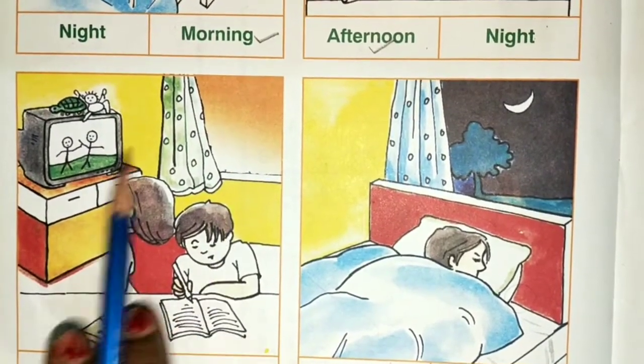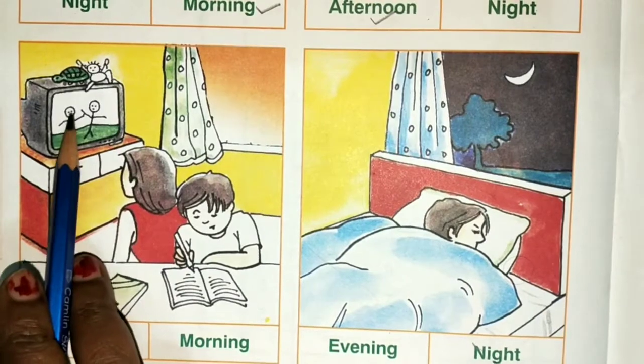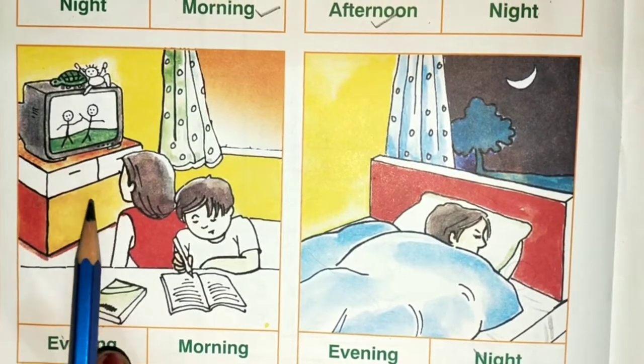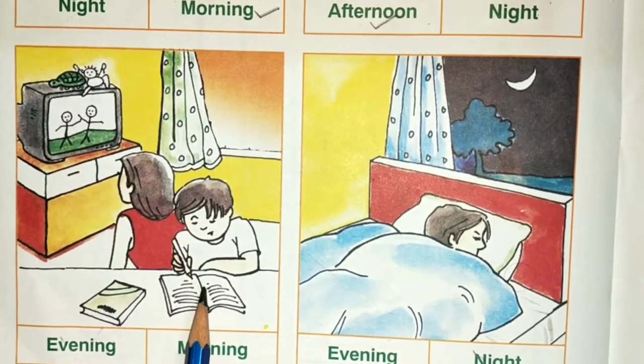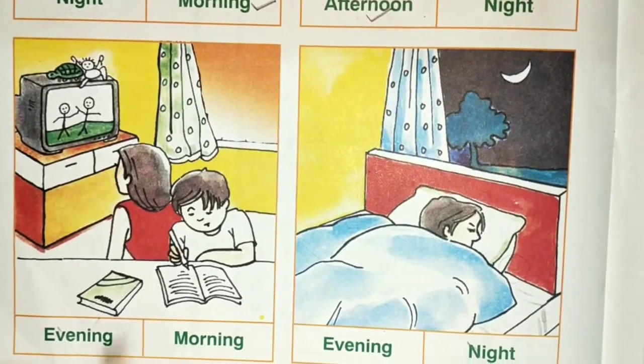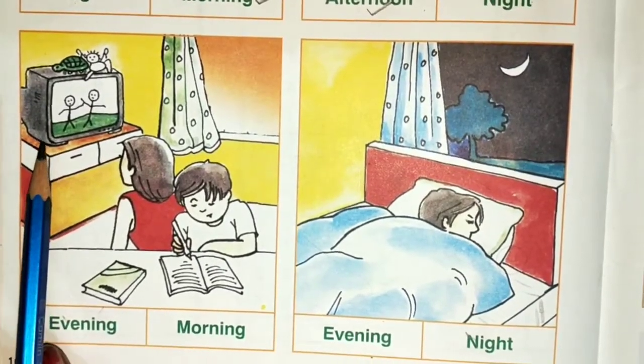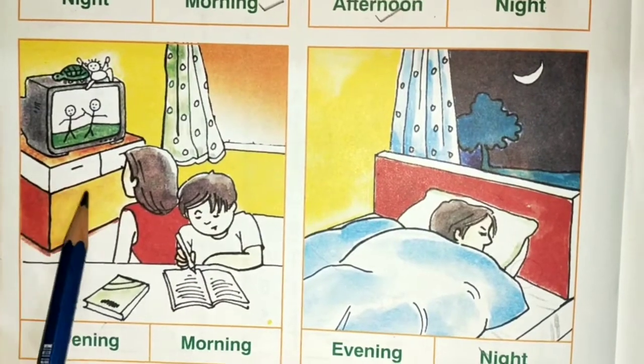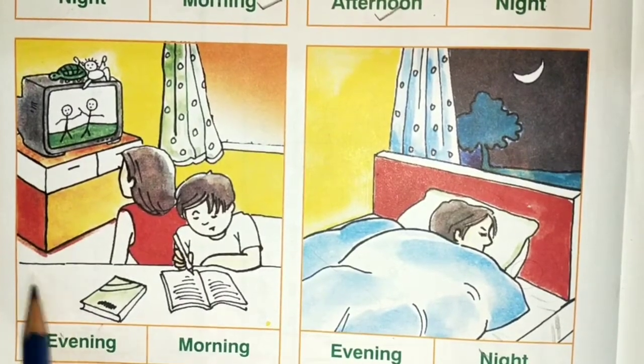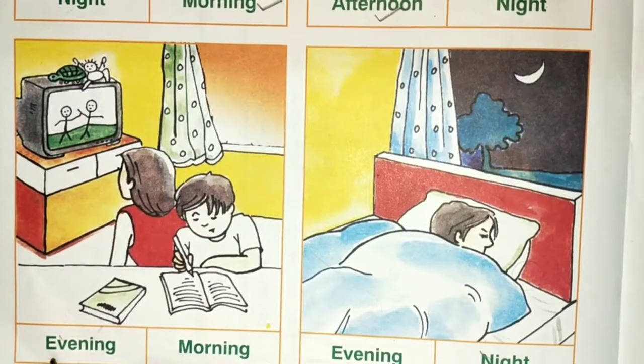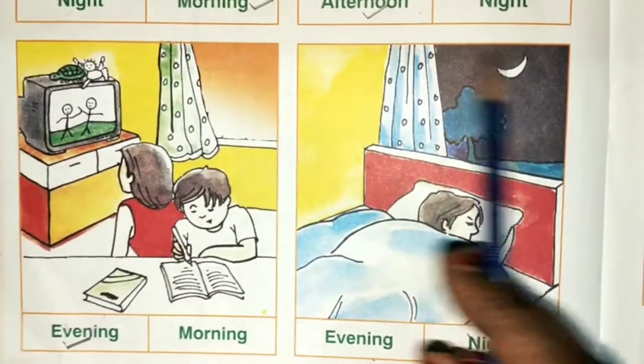In the third picture we see a person reading and watching television. We have to decide on the evening or morning. Evening time, we watch TV and many people read. Evening is our time to study and entertainment. This is why this is evening and morning is not going to happen.